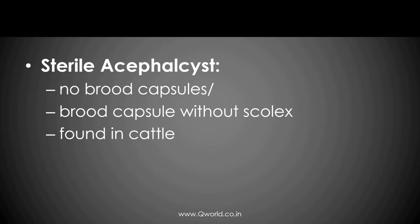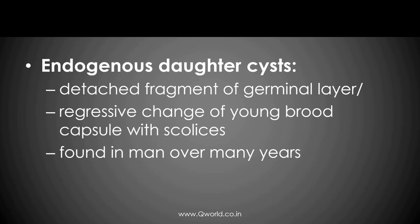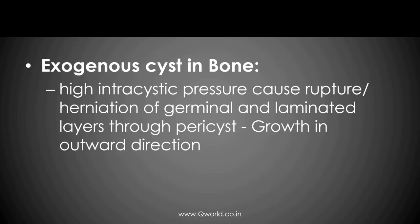If the hydatid cyst does not contain brood capsules, or if brood capsules are present but without scolices, we call it a sterile acephalocyst. Sometimes within a hydatid cyst, the brood capsules detach and start to produce another cyst within a cyst — we call this an endogenous daughter cyst. Sometimes instead of growing inside the germinal layer, it starts to give growth outside — that is known as an exogenous cyst, usually seen when it develops in bone.